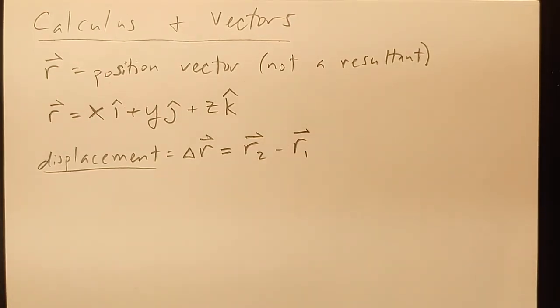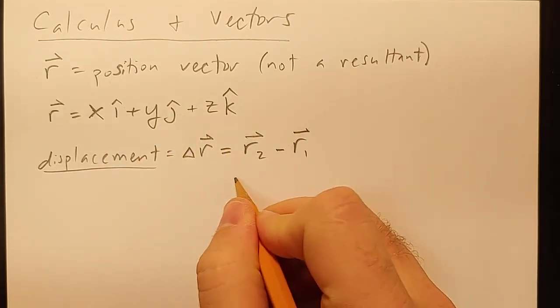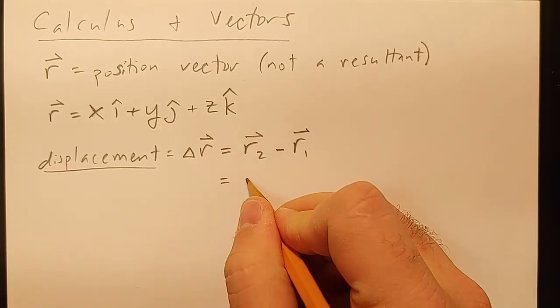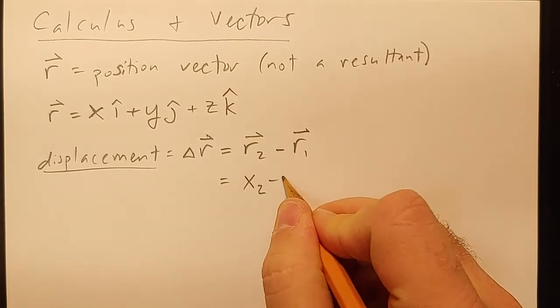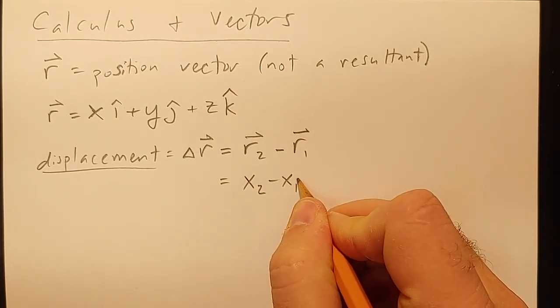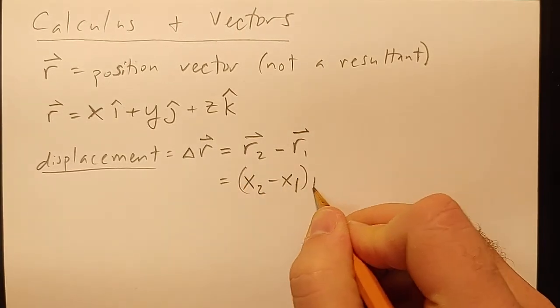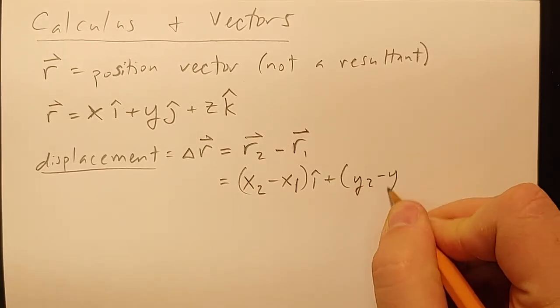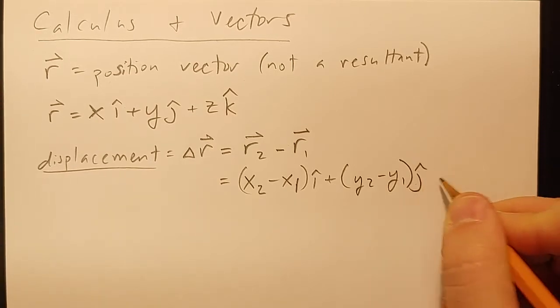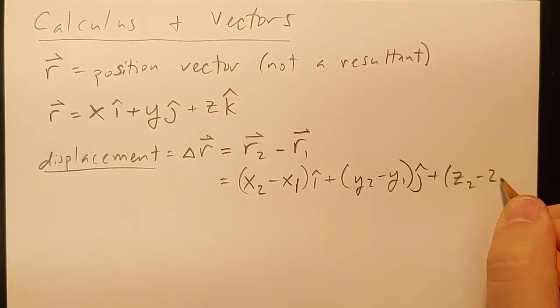We know from subtracting vectors that we can deal with each one of the components separately. So this is going to be equal to the x-coefficient from your second position minus the x-coefficient from your first position in the i-hat direction, and then we just do the same thing with the y's and the same thing with the z's k-hat.